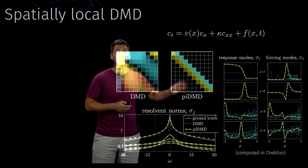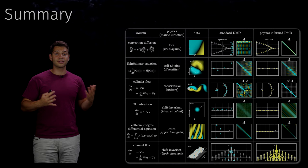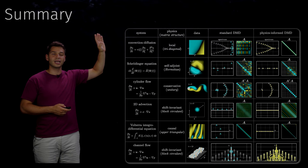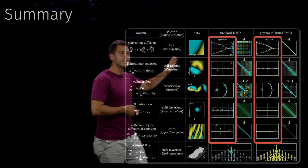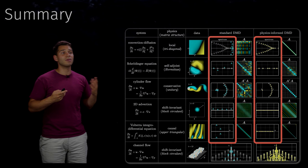A summary slide covers all the systems studied using physics-informed DMD, including quantum mechanics, fluid dynamics, and a neuron equation. The key result, highlighted in red columns, is that Pi-DMD is much better at identifying eigenvalues of the system when we incorporate knowledge about the underlying physics.